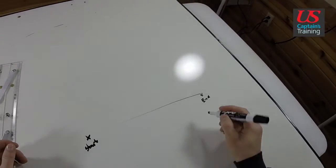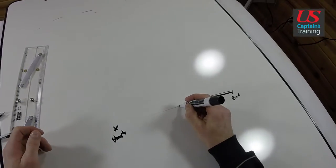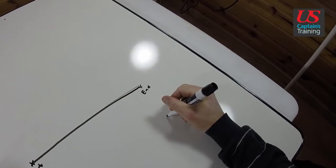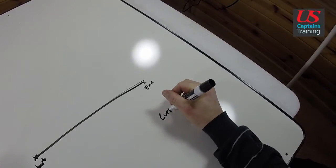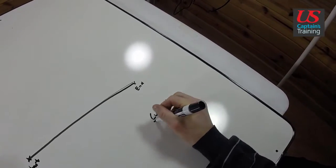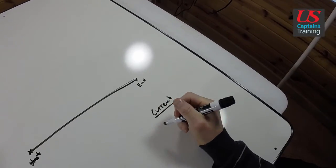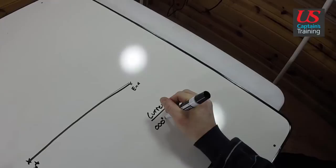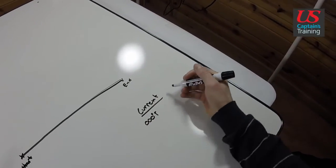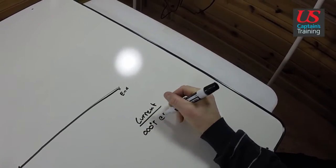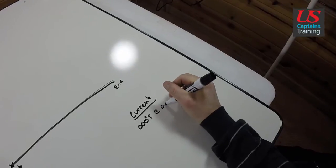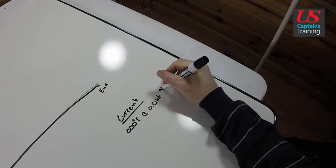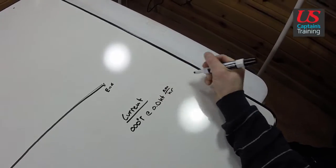The problem will give us a current. The current has two components: set and drift. They'll give you a set of some degrees true, and they'll give us a certain amount of knots. A knot, remember, is equal to nautical miles per hour.